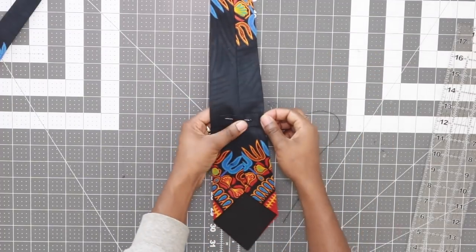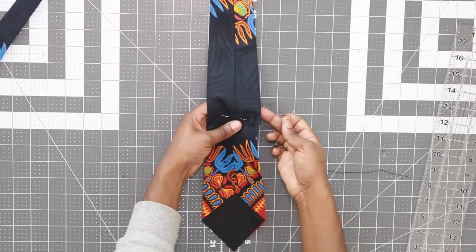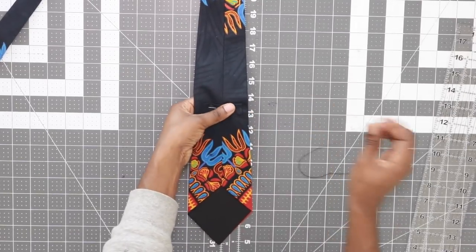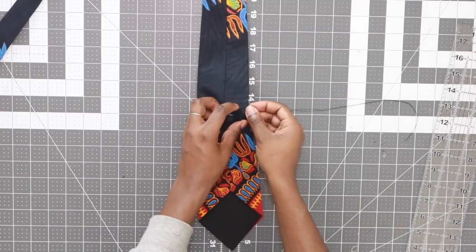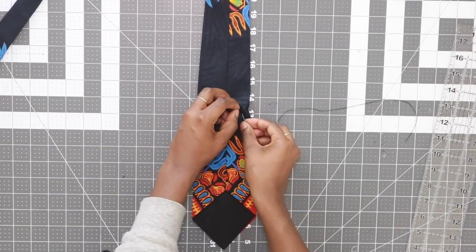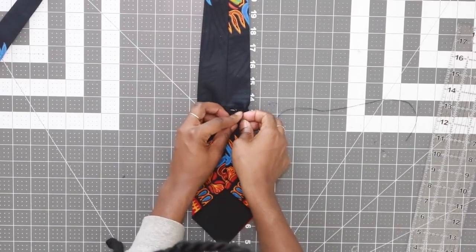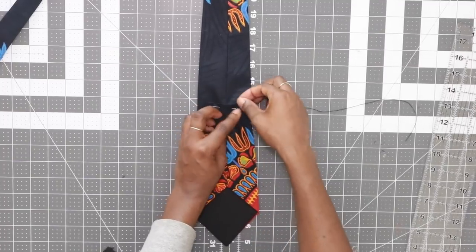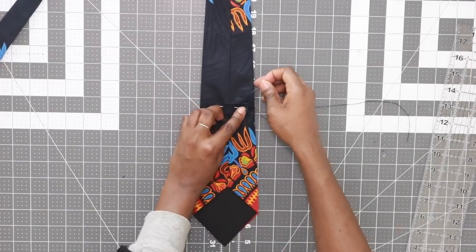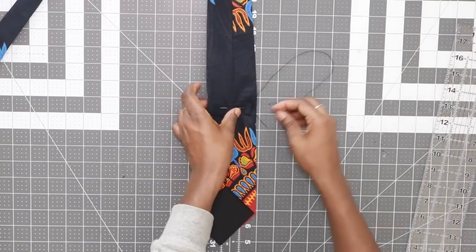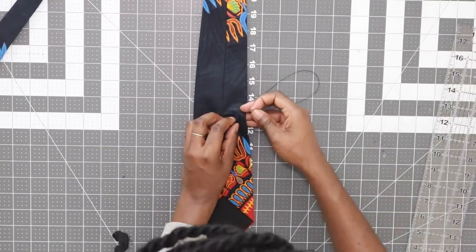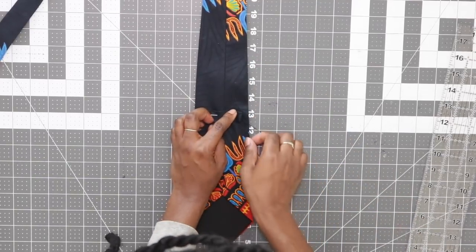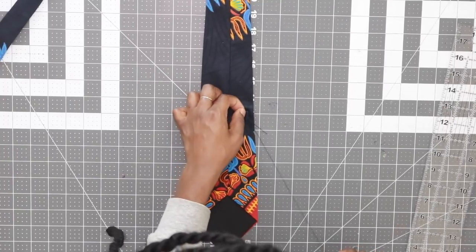Next go ahead and thread a hand needle. And you're going to slip stitch the tie keeper to your tie. Now make sure you don't push the needle all the way through to the front of the tie. You're only going to catch it on the back. So what I like to do is pinch the fabric to get the front out of my way before pushing my hand needle through. And I'm doing a slip stitch, so I'm pushing it through that fold of the tie keeper, slipping it through the fold of the tie keeper so that the stitches are hidden, and then I bring it through the back of the tie.